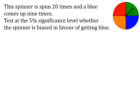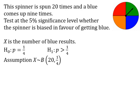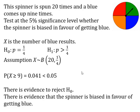When showing your working out, after the first three steps, the fourth step is to work out the p-value. The probability that x is greater than or equal to nine — nine blues or more extreme — is 0.041, which is less than 5%. So in this example there is evidence to reject the null hypothesis, and in context that tells us there is evidence that the spinner is biased in favour of getting blue.